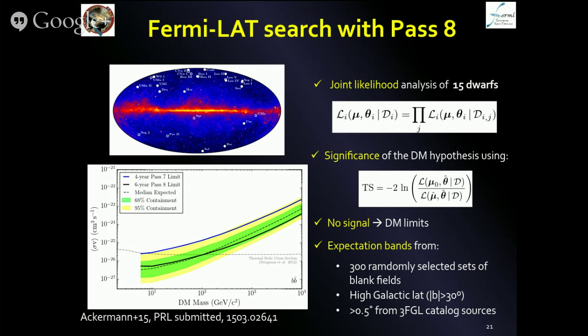What's shown on the bottom is our current limits from the most recent Pass 8 analysis using these known dwarfs. The dashed horizontal line — the thermal relic cross-section — slightly increases at lower dark matter masses. If you just assume a weak-scale particle annihilating with this cross-section, you get out the observed relic abundance of dark matter in the universe. This is an incredibly well-motivated hypothesis for indirect dark matter searches, and we are testing it. Fermi was really the first experiment to hit the thermal relic threshold with our sensitivity. In this particular plot, we are excluding cross-sections at or below the thermal relic cross-section for masses below 100 GeV, and we're starting to cut deeper at lower masses as well.